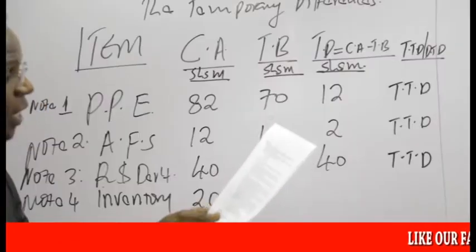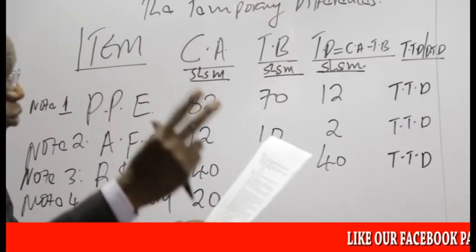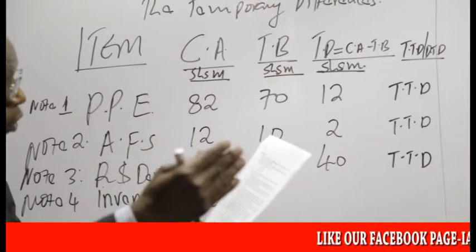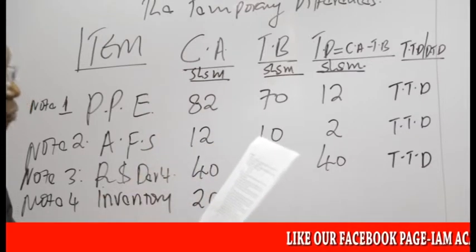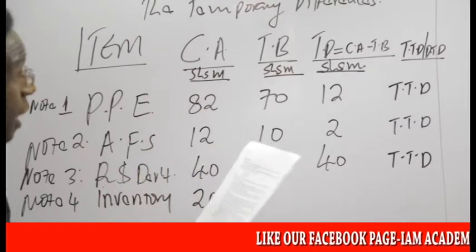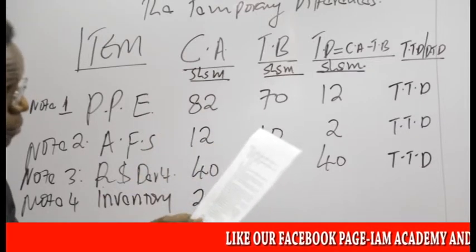Welcome to today's lesson. Today we look at data communication and computer networks, which is chapter 6 of the MIS series. In other words, there are two items we are going to add back for the purpose of determining the tax base.